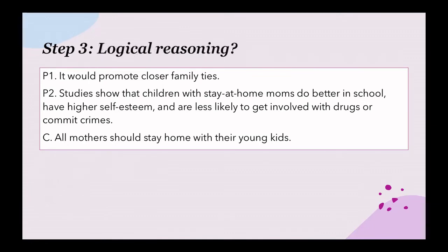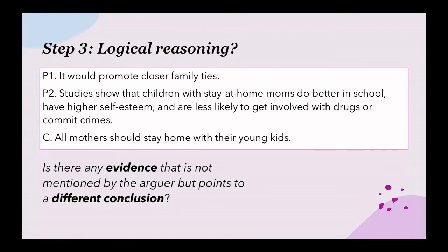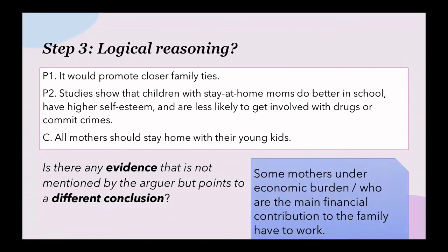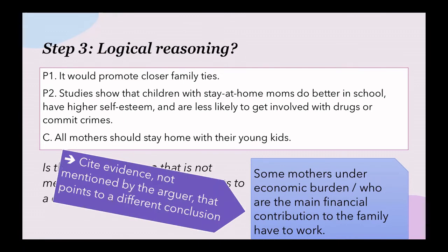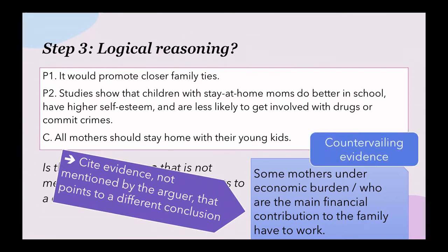We have to ask: is the reasoning logical enough? If we assume the premises are true, the premises and conclusion are relevant, so we examine the sufficiency of the premises. We ask: is there any evidence not mentioned by the arguer that points to a different conclusion? The arguer may omit this important evidence: some mothers who are under economic burden or who are the main financial contributors to the family have to work. When we cite evidence not mentioned by the arguer but pointing to a different conclusion, we bring up countervailing evidence to show that the argument is bad.